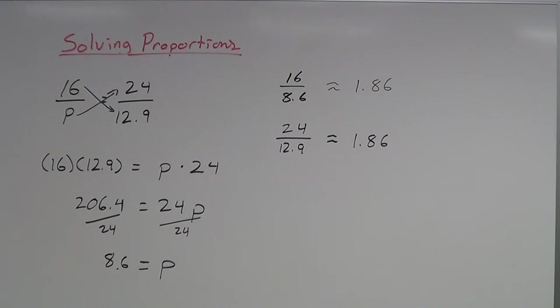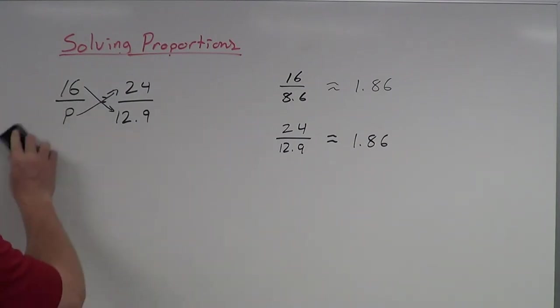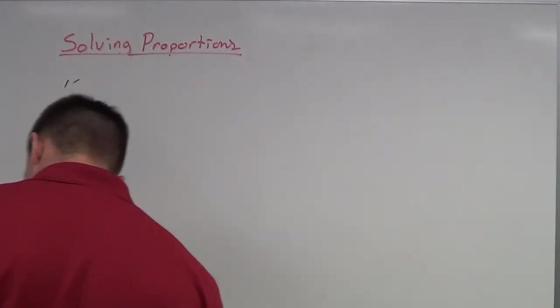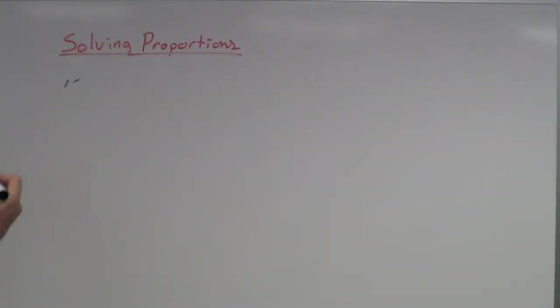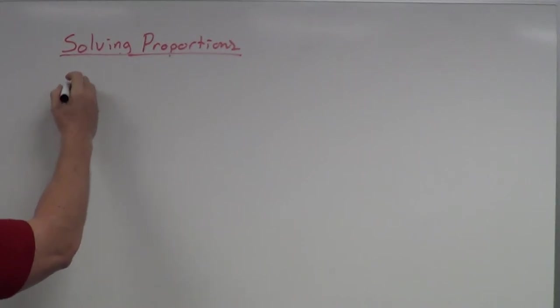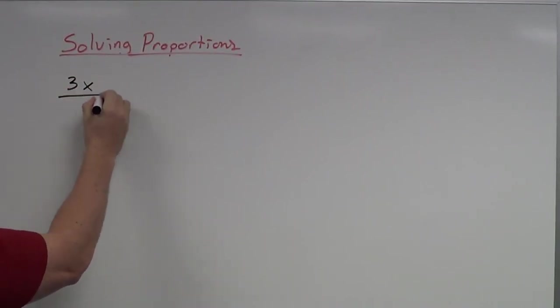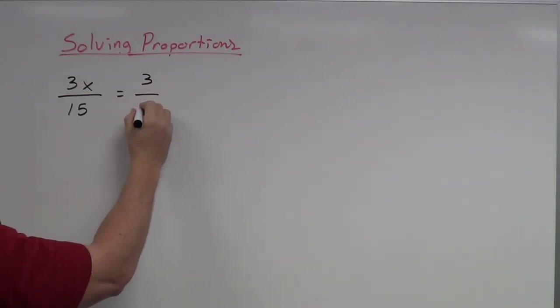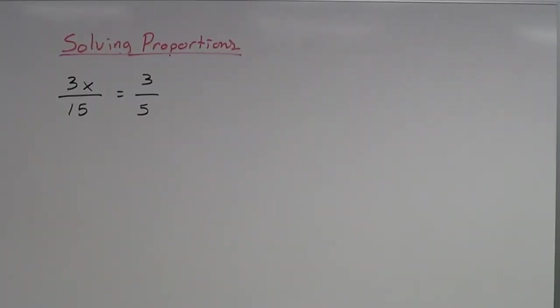So that's one example of solving proportions. Let's do a couple more examples so we can get a better handle on this. For example, what if you have a number with the variable? So what about 3x over 15 equals 3 over 5? That really doesn't change anything for us. We're still just going to cross multiply.